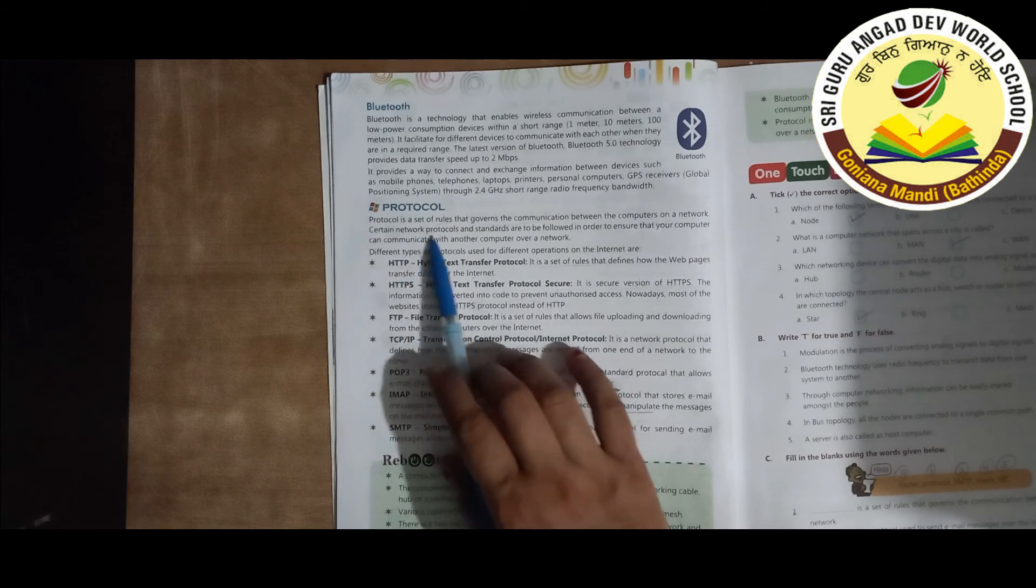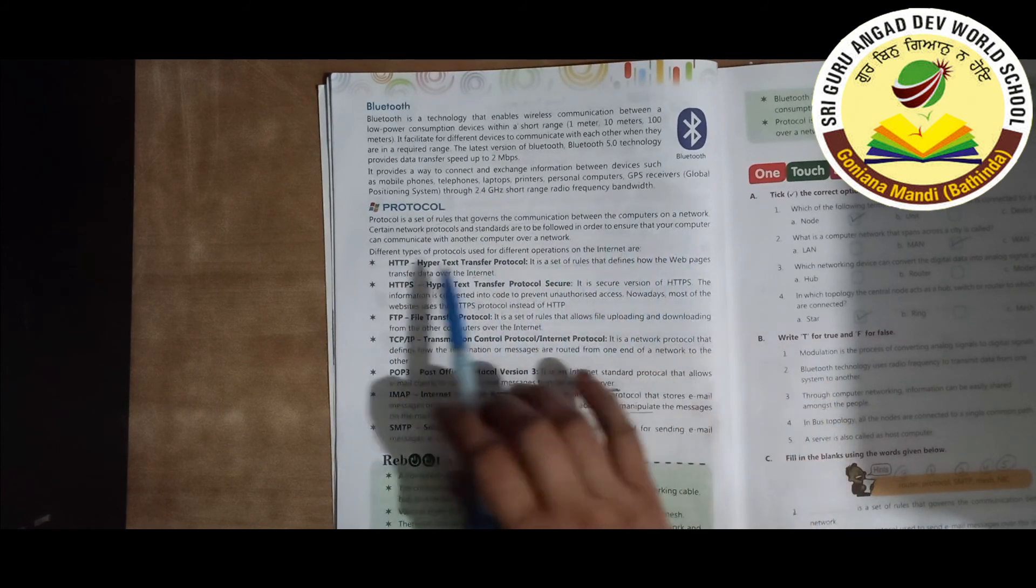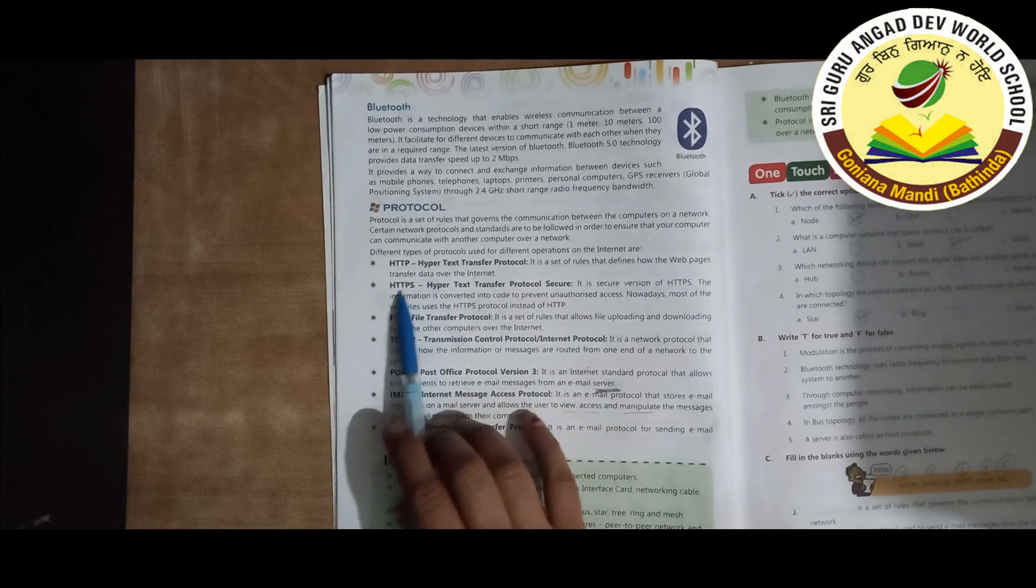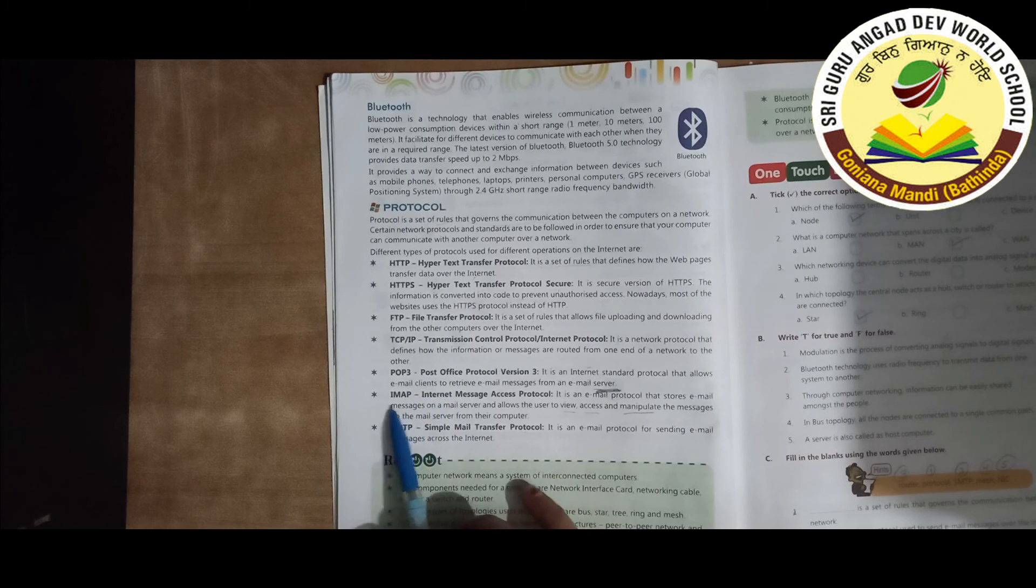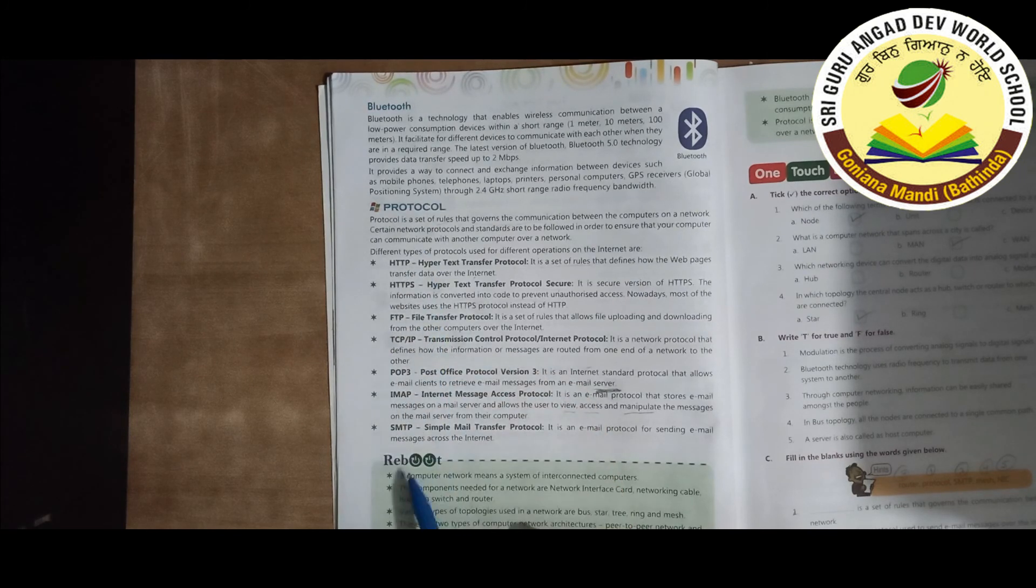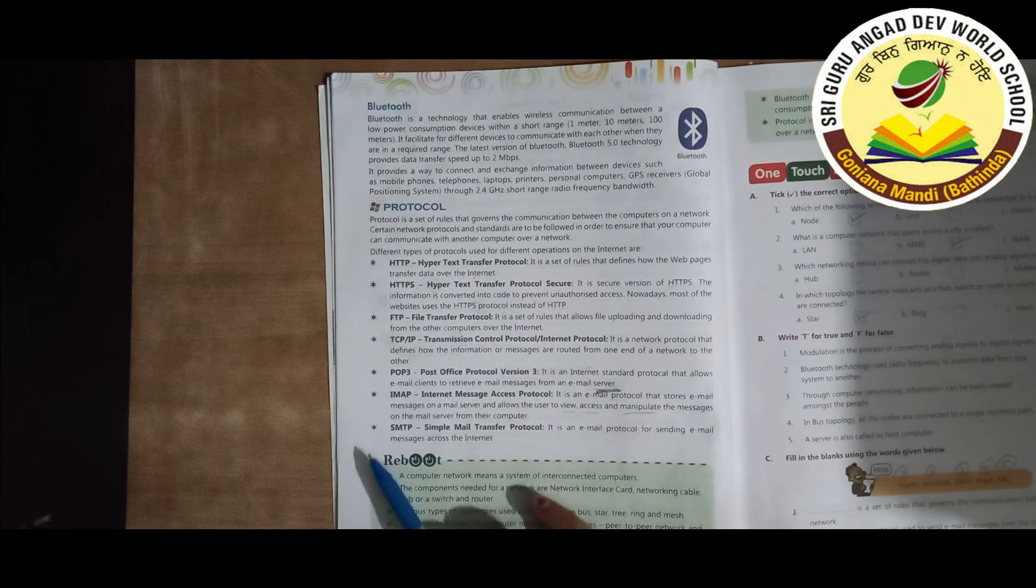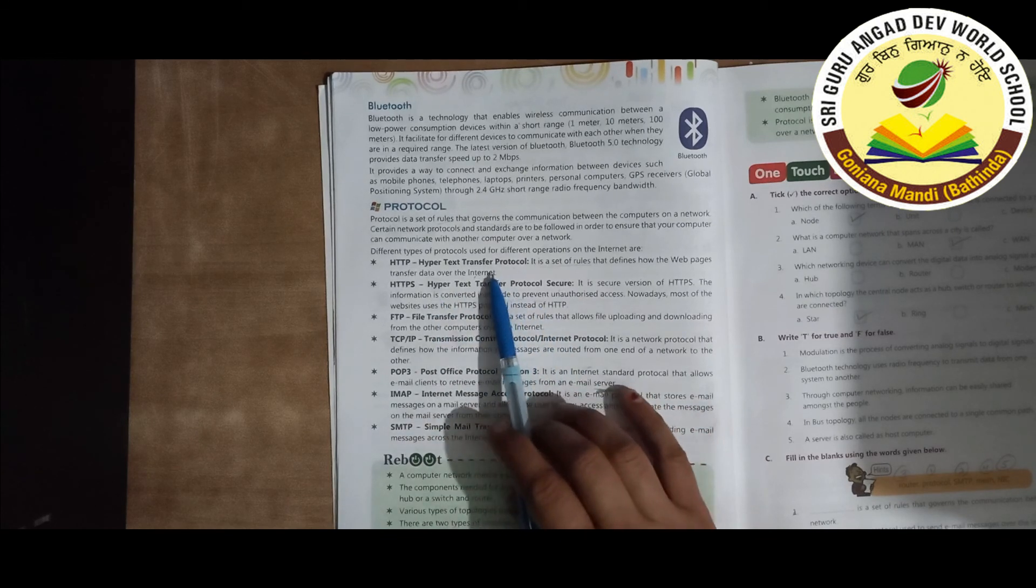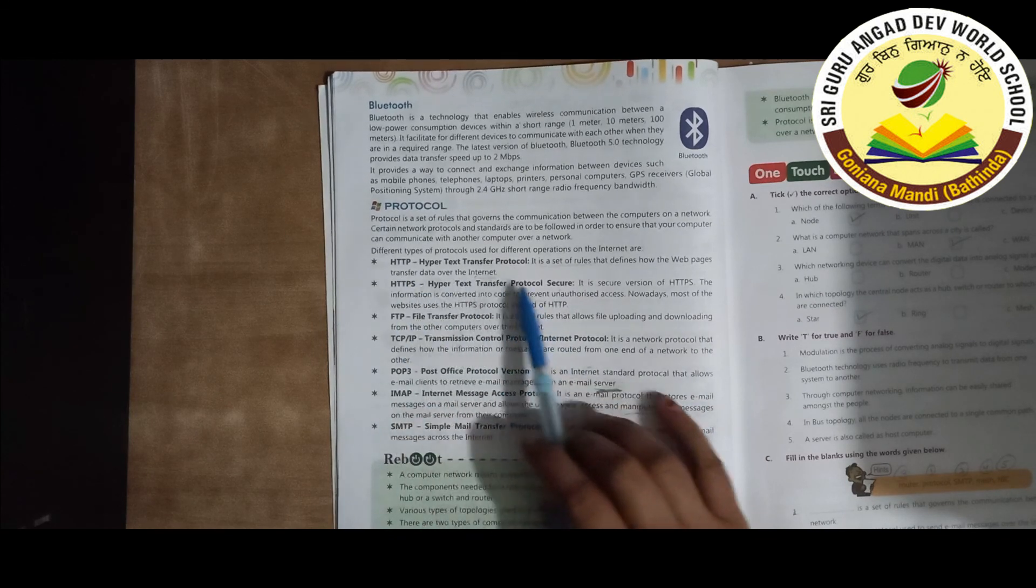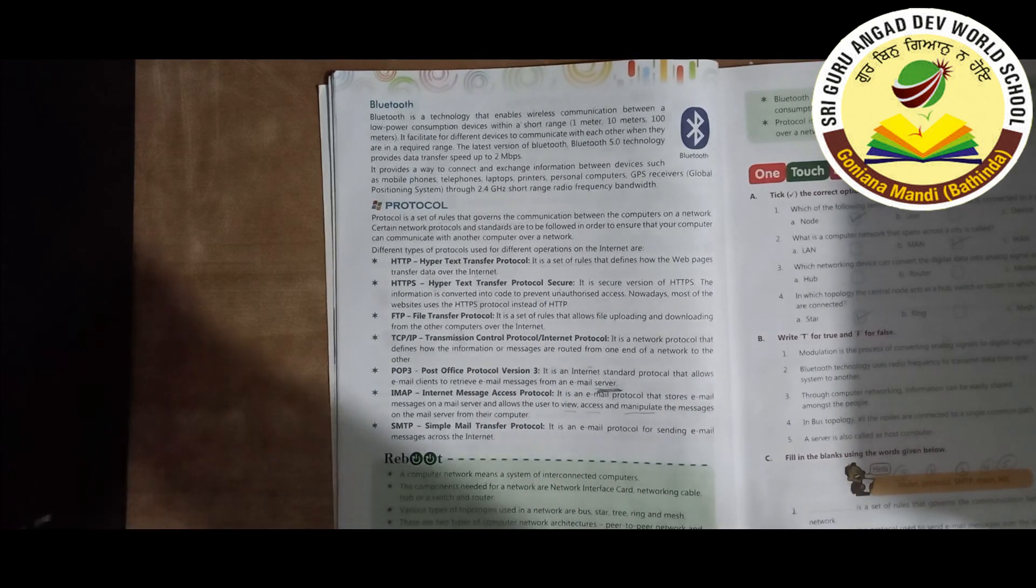What are protocols? A set of rules that governs the communication between computers on a network. HTTP, HTTPS, FTP, TCP/IP, POP3, IMAP, SMTP. These are the protocols through which we can transfer the data in different ways. The data is sent through these protocols on the Internet. So thanks and have a nice day, students and friends.